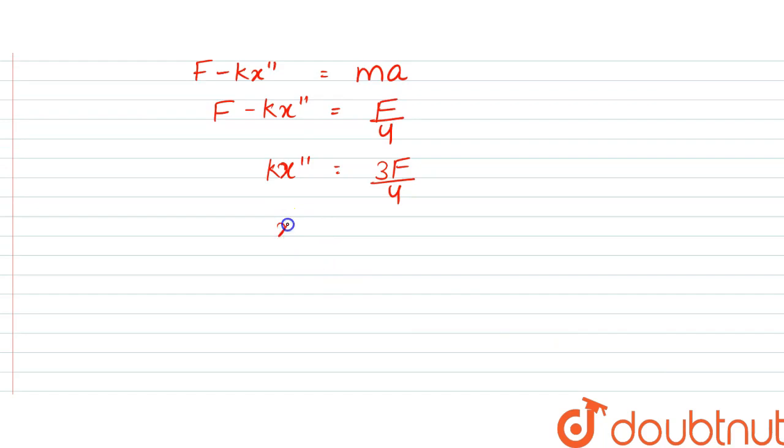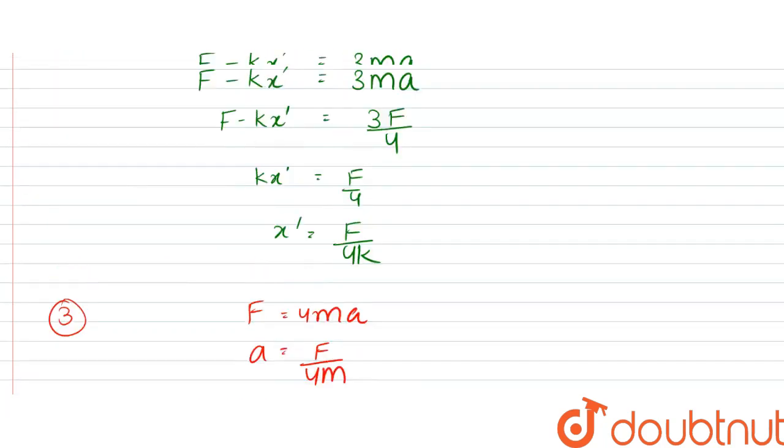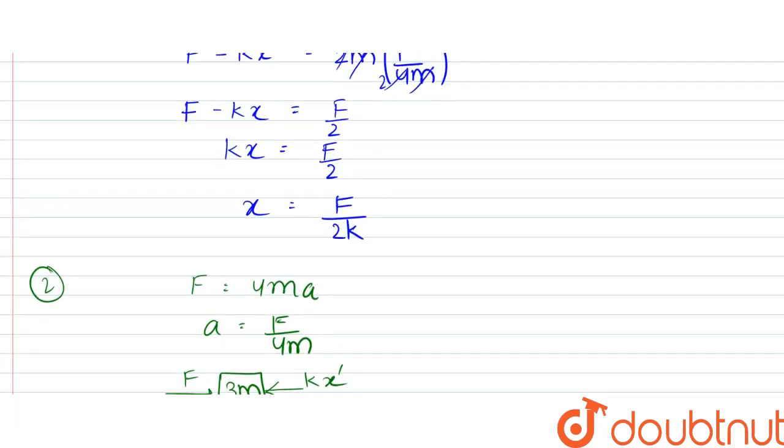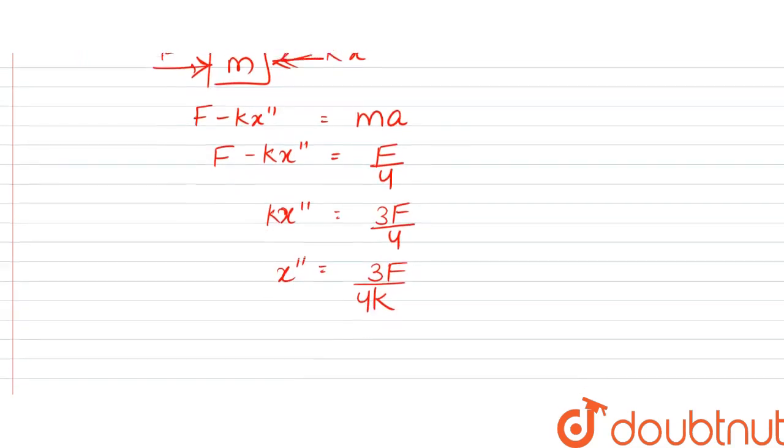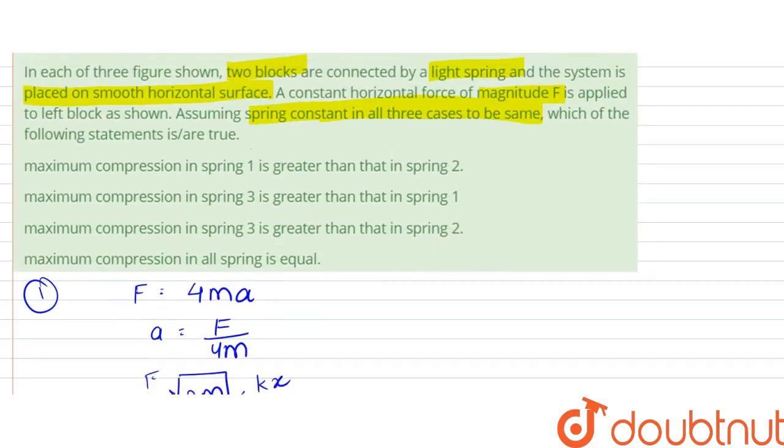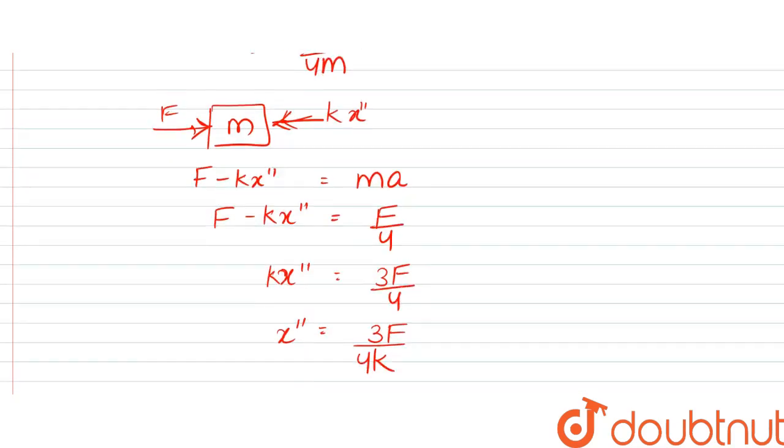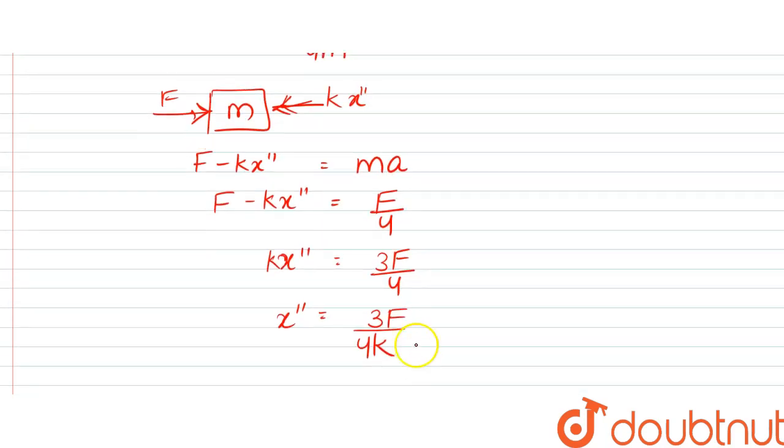So here it is F by 2k, which we can write to be equal to 2F by 4k, and here it is F by 4k, and 3F by 4k. So maximum compression occurs in third case, that is 3F by 4k.